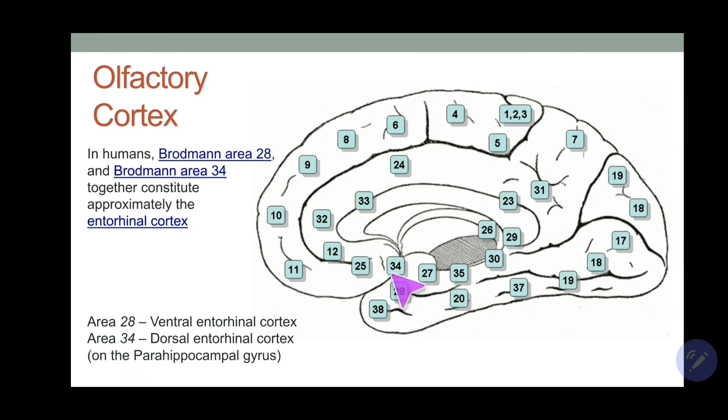So this area is entorhinal area, and this area includes area 28, which is ventral of the parahippocampal gyrus. So just remember that in case if they ask like olfactory cortex, what Brodmann's area it is. On the ventral aspect of the parahippocampal gyrus it's 28, and on the dorsal portion of the entorhinal cortex it's area number 34.